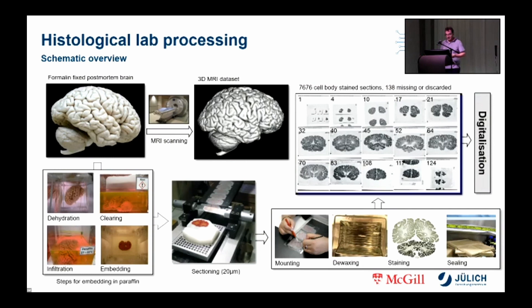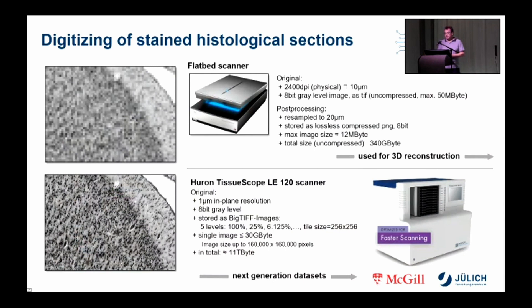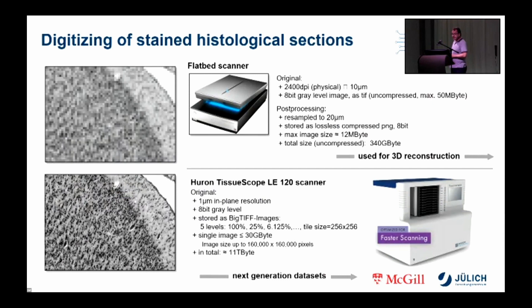For the digitalization of the stained sections, first a flatbed scanner with a maximum resolution of 2400 DPI, which corresponds to 10 microns, was used. TissueScope scanners providing a maximum resolution of 1 micron were also used. The usage of two different scanners has historical reasons — when the scanning started, the TissueScope scanners were not yet available, so sections were rescanned a couple of years later. However, the basic data processing for the 3D reconstruction is based on the 20 micron flatbed scanner images only.